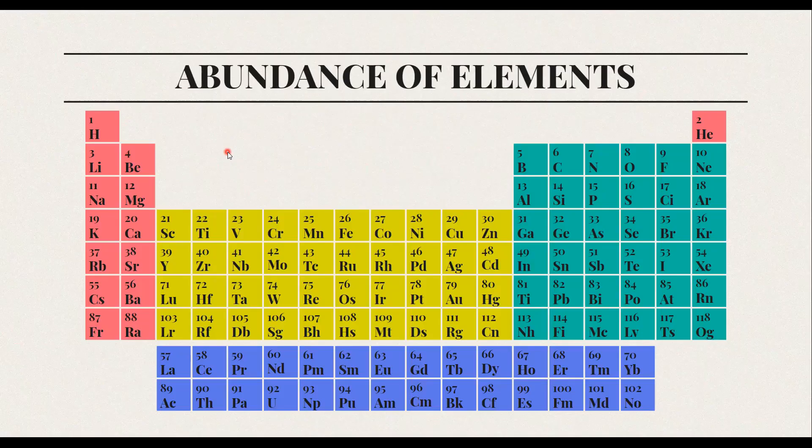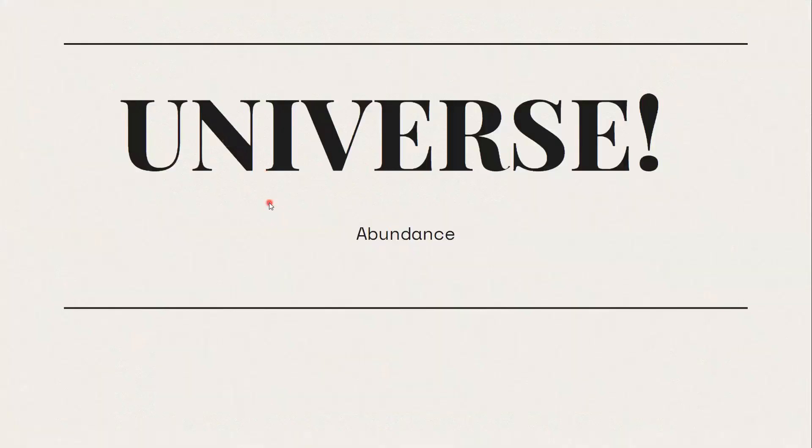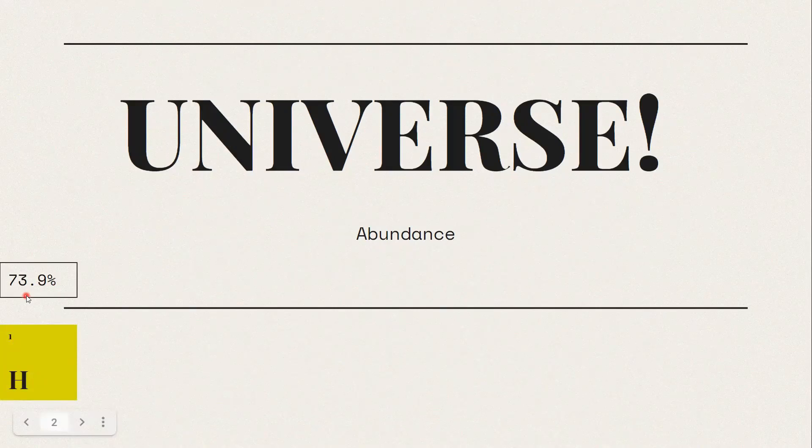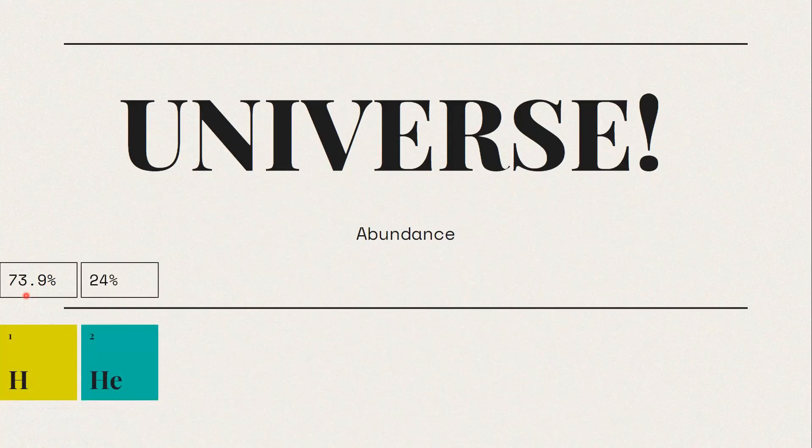First, let's talk about the universe and the abundance of different elements. The most abundant element is hydrogen gas, forming 73.9% of the entire universe, followed by helium at 24%. Both are essential in the formation of the universe.